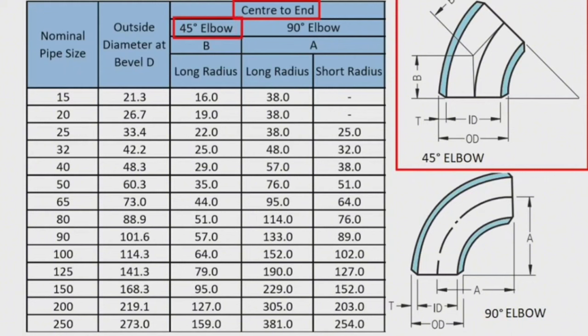Elbow size refers to the distance from the center of the elbow to the end of one side. From the pipe elbow dimensions chart, we find that the length of a 4-inch, center-to-end, 45-degree elbow, long radius is 64 millimeters.